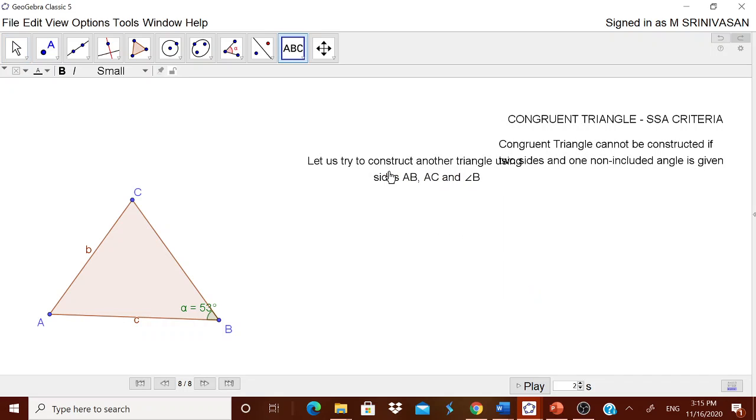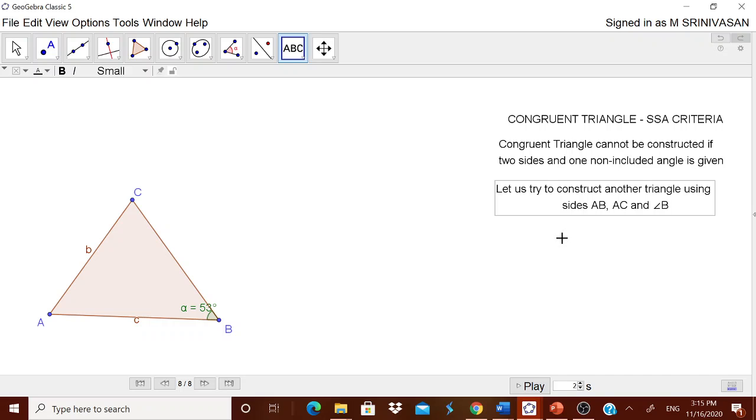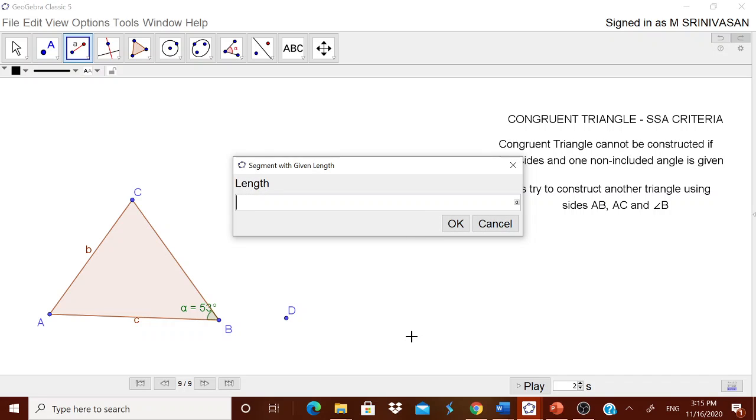I want to take two sides and one non-included angle, but I am taking AB, I am taking AC, and not angle A but angle B. Let us try. For that let me go for this segment, segment with the given length. I want a length of AB, therefore touch it. What length you want? You simply type C.